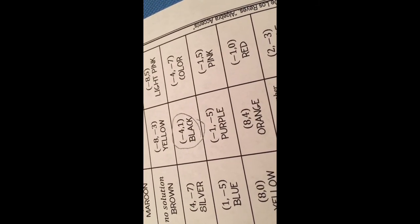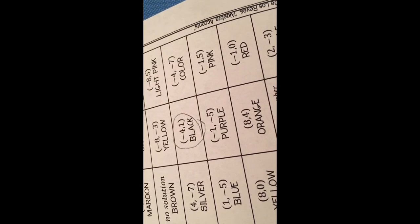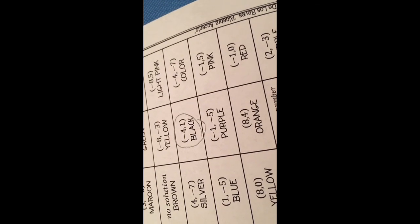My ordered pair in number 10 is negative 4, 1. We come over here to number 10, and it's colored black at negative 4, 1. This is 4 out of 14 done for you. Take your time — you can do this.